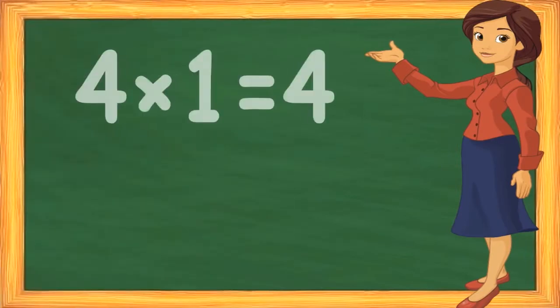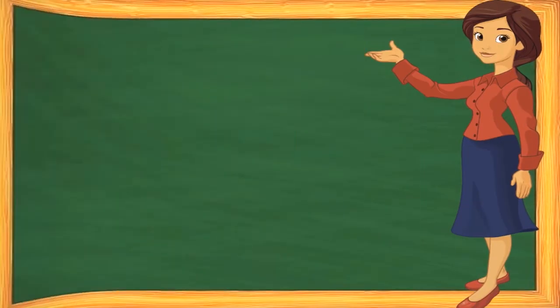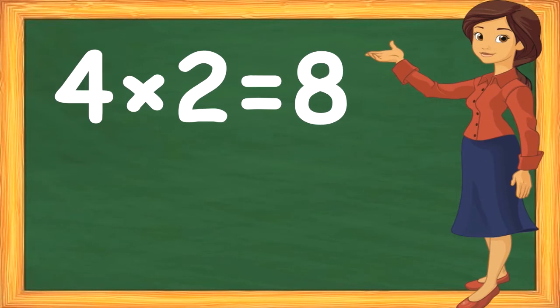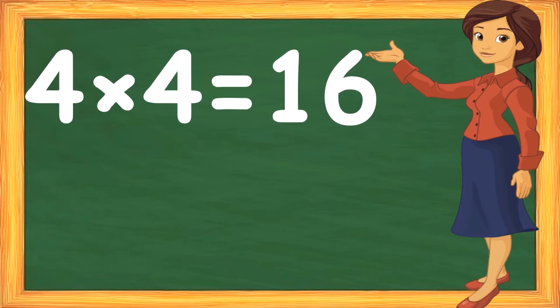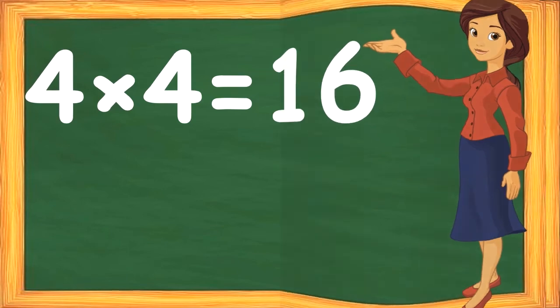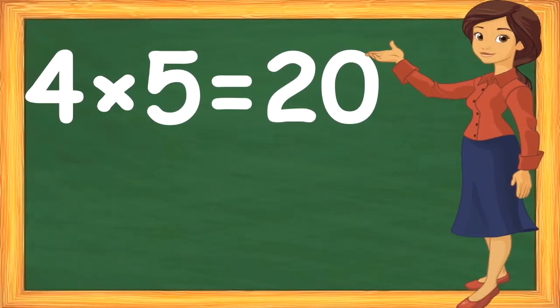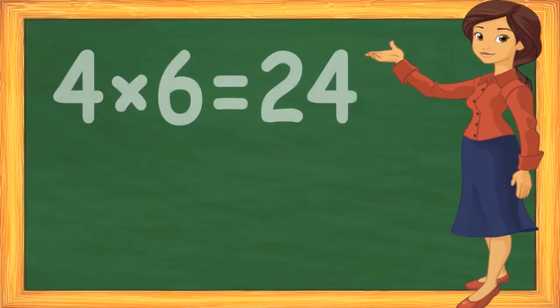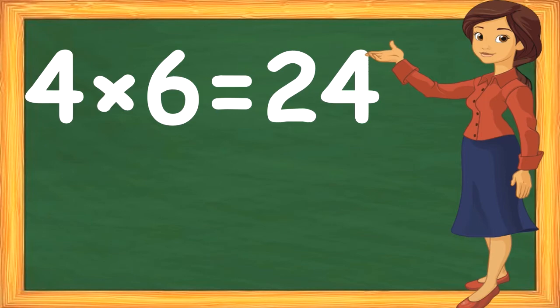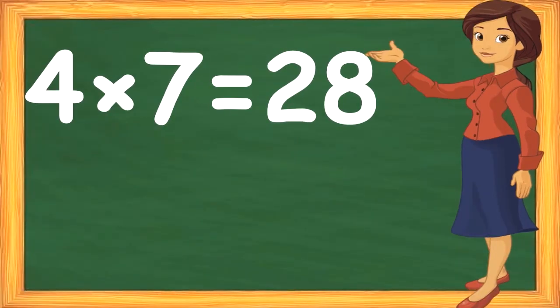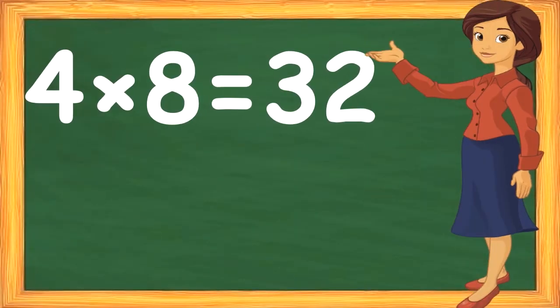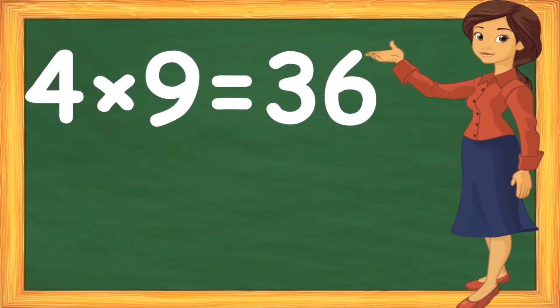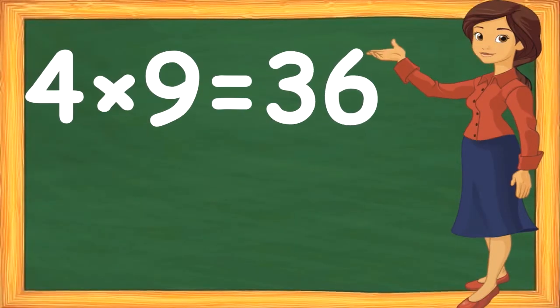4 1s are 4, 4 2s are 8, 4 3s are 12, 4 4s are 16, 4 5s are 20, 4 6s are 24, 4 7s are 28, 4 8s are 32, 4 9s are 36, 4 10s are 40.